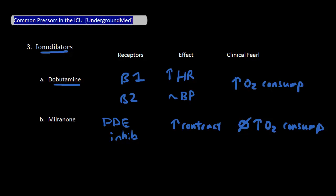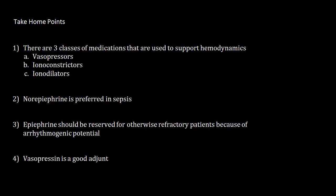We've reviewed a great deal of information here, so let's summarize. There are three classes of medications that are used to support hemodynamics. These are vasopressors, ionoconstrictors, and ionodilators. Each have an important role in critical care.